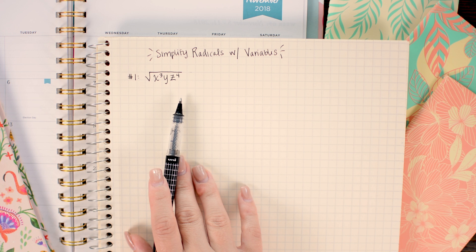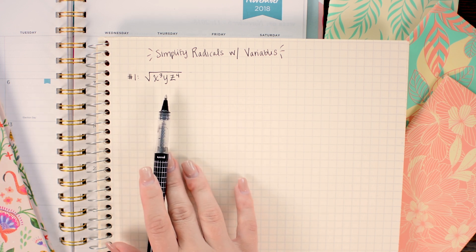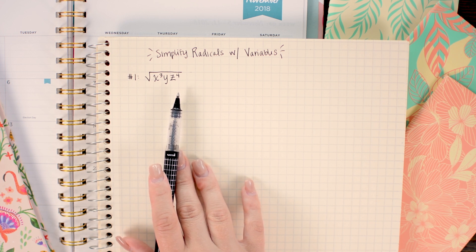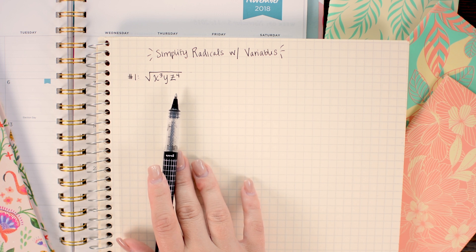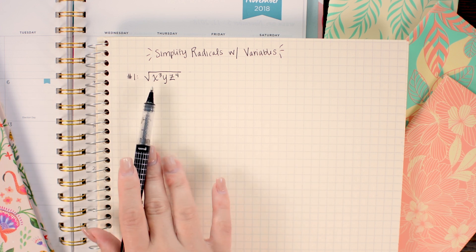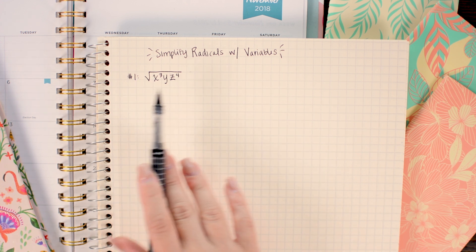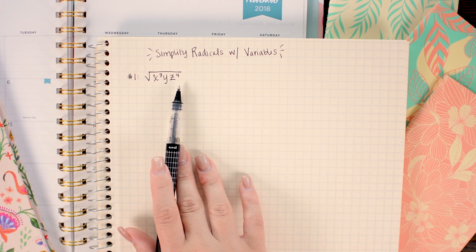In this first problem we want to simplify the square root of x cubed y z to the fourth. So when I'm working with square roots I'm always looking for groups of two because I know that for instance the square root of x squared is simply x or the square root of 2 squared is simply 2. I think that's the easiest way to approach these so as you can tell in this problem we have three x's so I can make one group of two and then I'll have a third x by itself and I have four z's so I can make two groups of two there. So what I'm going to do in this first step is I'm just going to split these out into little groups of two.